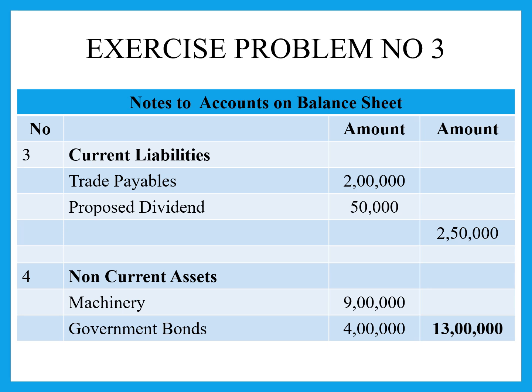Now for assets — non-current assets and current assets. Under non-current assets, also called long-term assets, we have machinery and government bonds. As per this problem, that is 9 lakh and 4 lakhs respectively, so the total non-current assets is 13 lakh rupees.